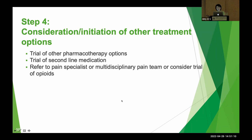Step four: consideration or initiation of other treatment options. If the first-line medication is working, continue it; we may need to add or switch to another medication. It is always a good option to refer the patient to a multidisciplinary pain team. If none of the medications work, we can consider a trial of opioid medications.